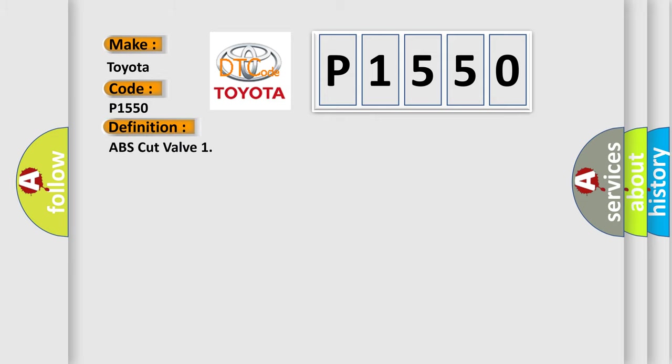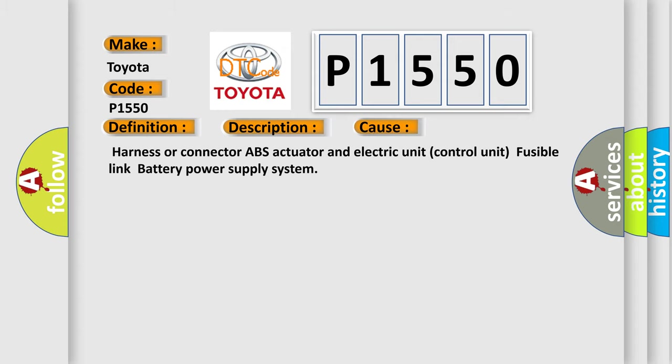The basic definition is ABS cut valve. And now this is a short description of this DTC code: when a malfunction is detected in cut valve 1. This diagnostic error occurs most often in these cases: harness or connector ABS actuator and electric unit control unit fusible link battery power supply system.